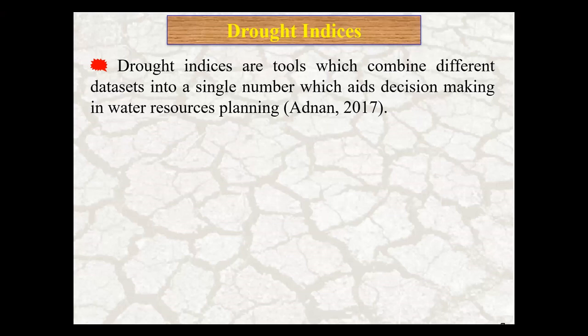Before starting on meteorological drought indices, let me review some drought index definitions. Drought indices are tools which combine different datasets into a single number, which aids decision-making in water resources planning. Most drought indices are based on meteorological or hydrological variables.